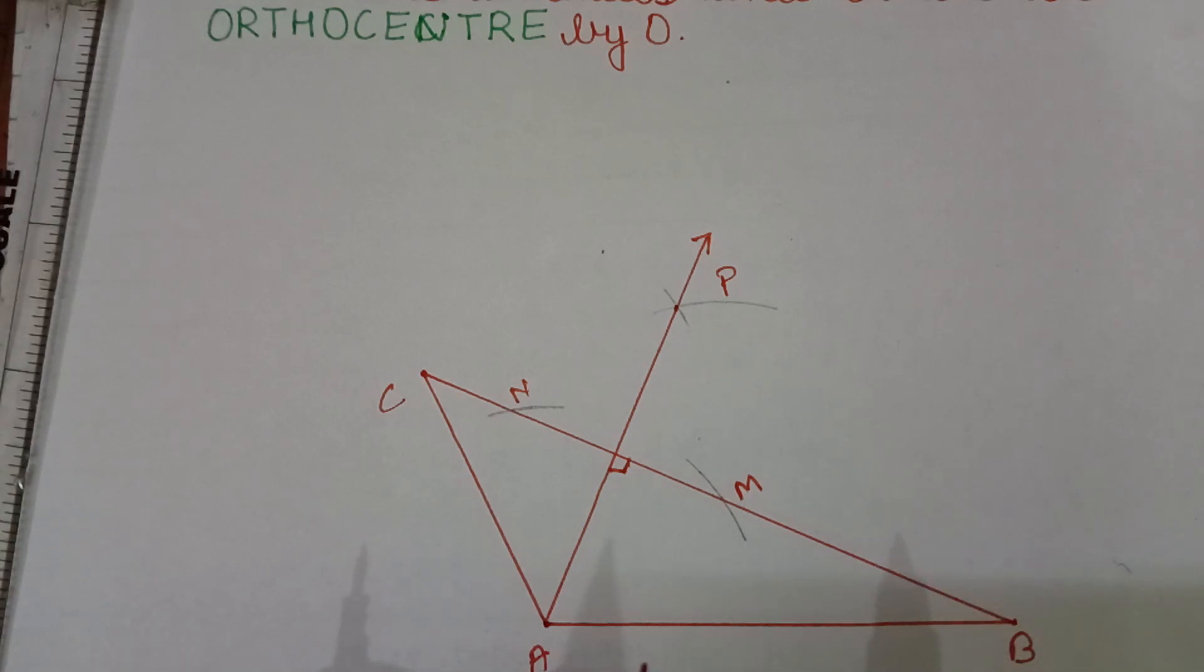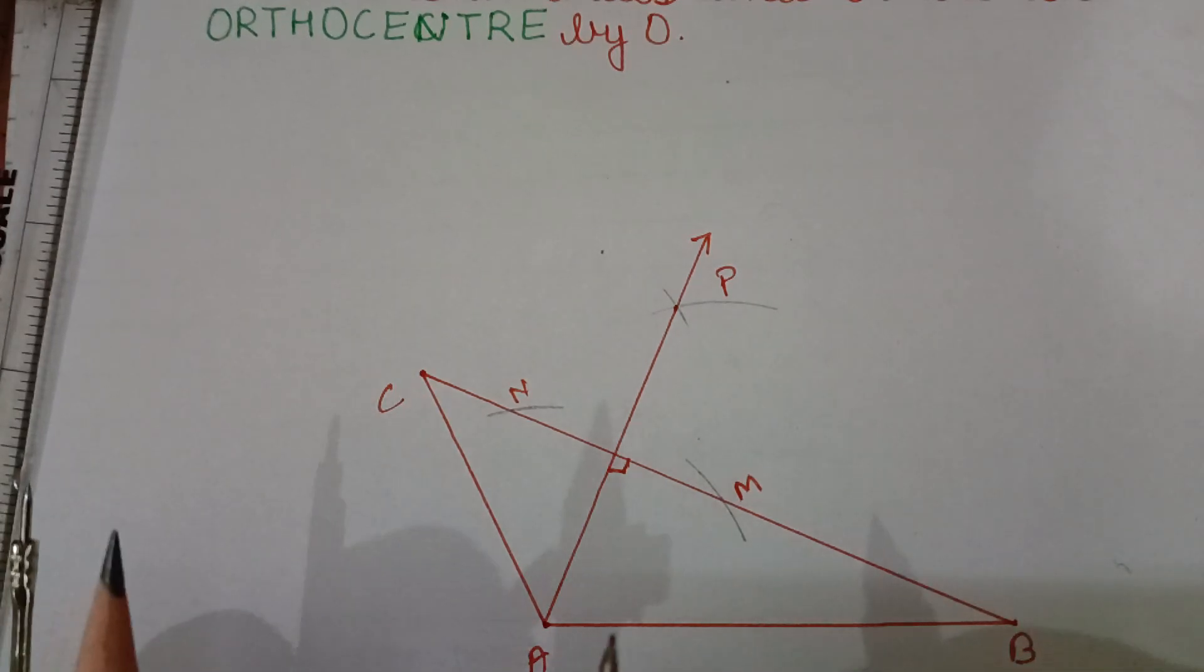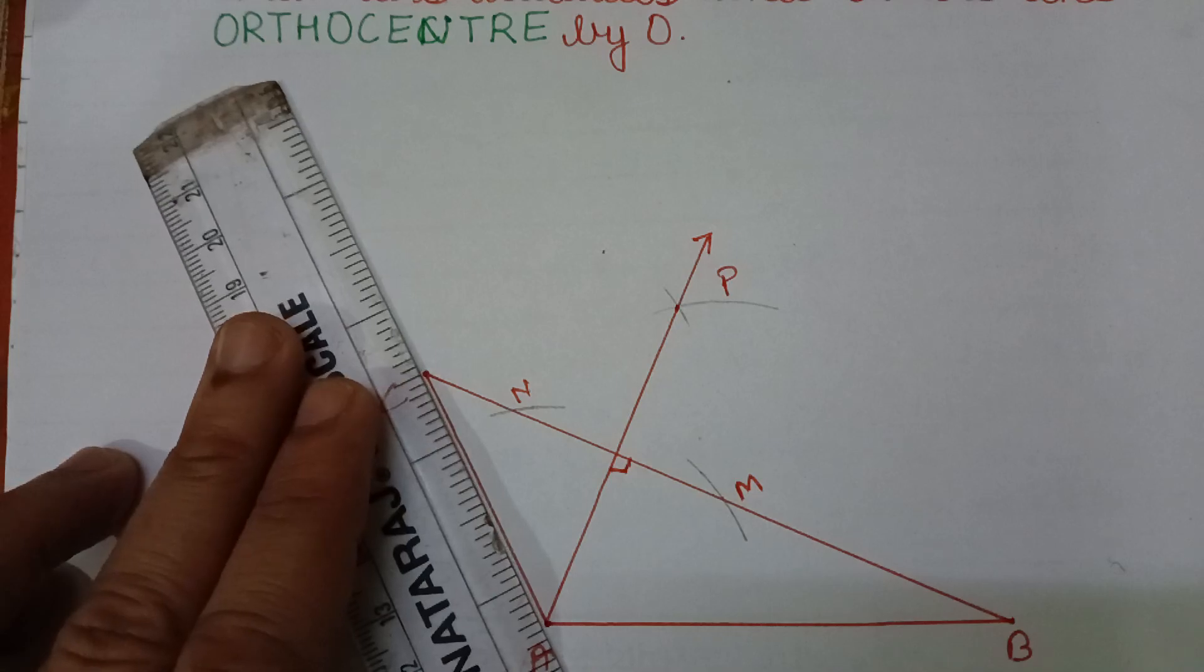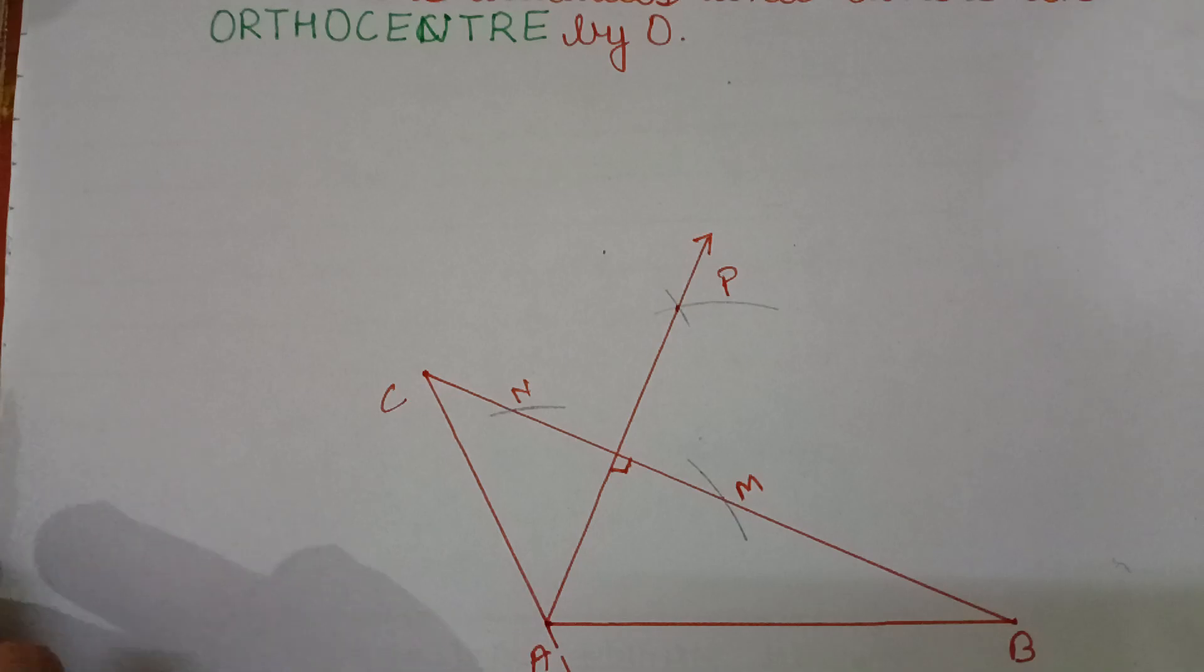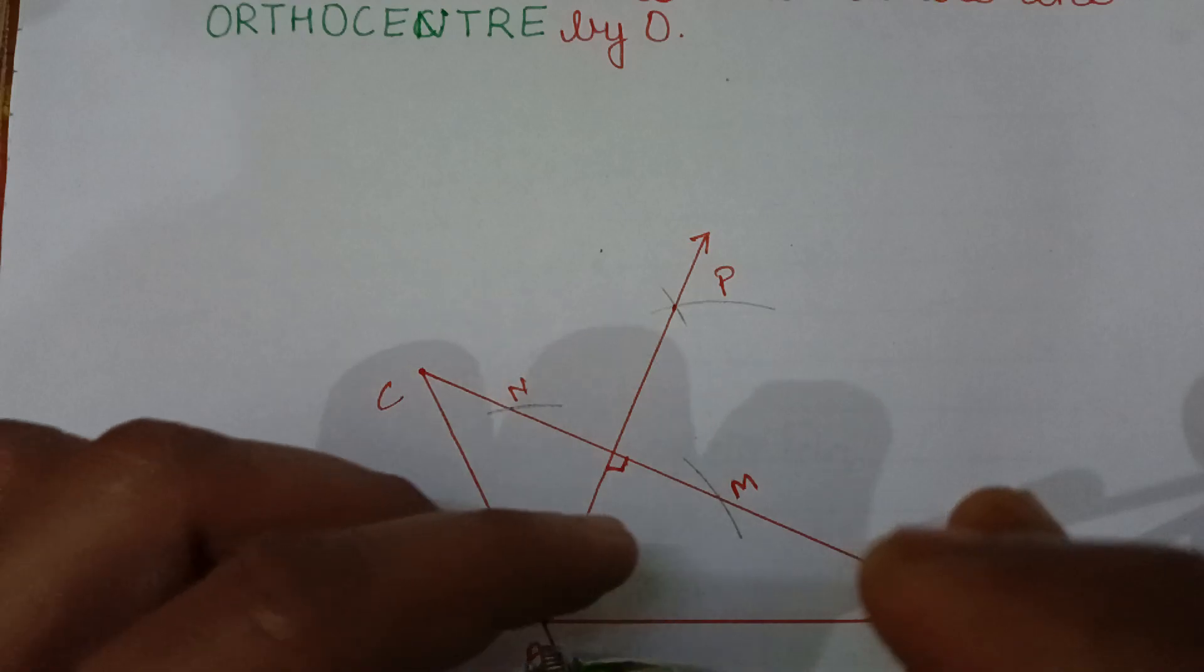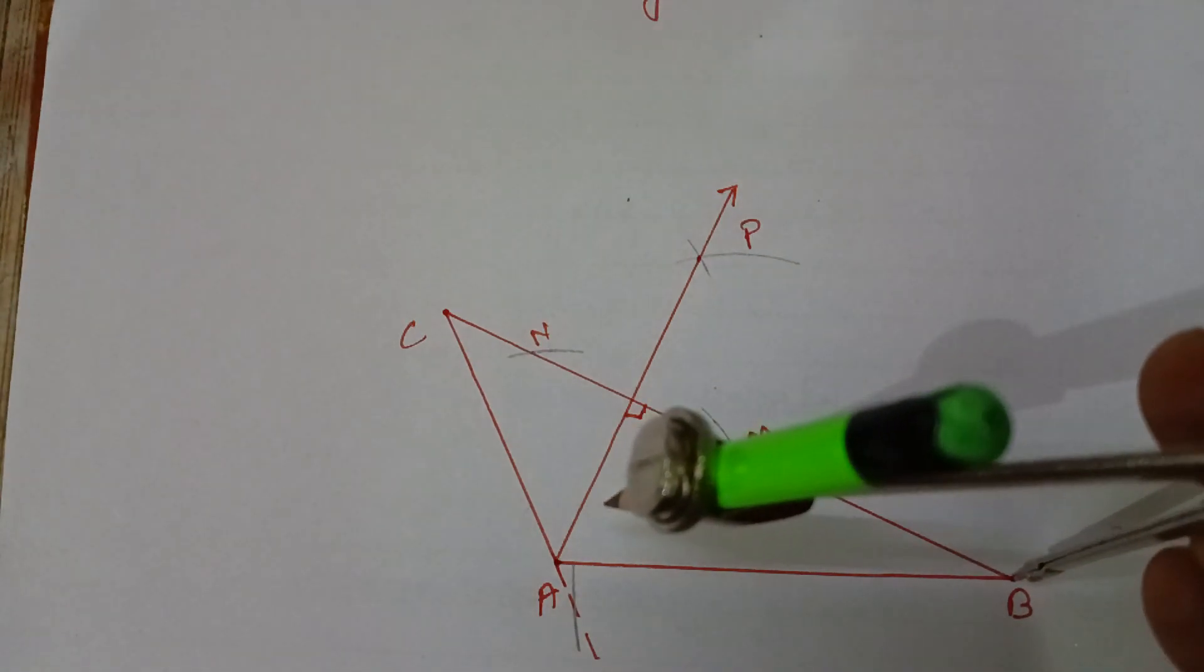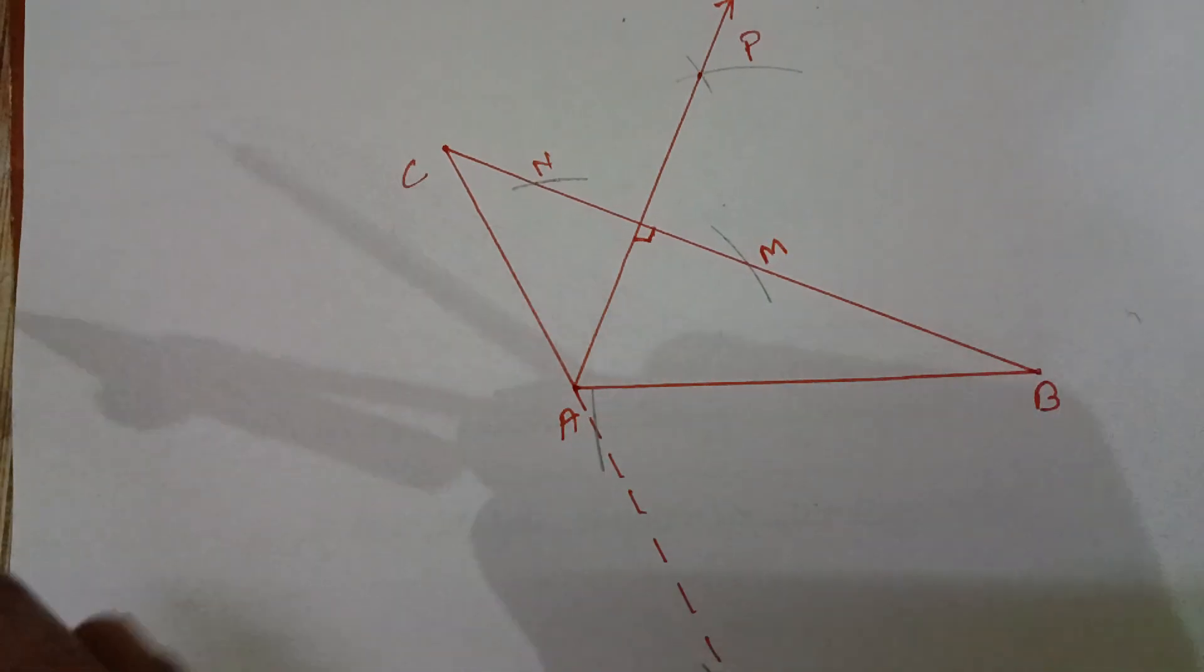Now, from B, if we draw the perpendicular, then we have to extend the side AC. In this way, we extend the dotted line this way, extend AC and again from point B, make two arcs to cut this. Like this, one cut is here, one cut here and another cut here. Extend some.